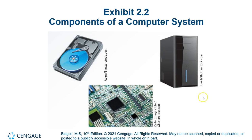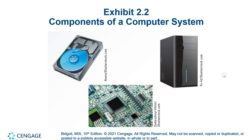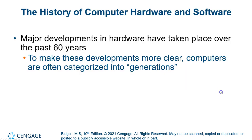This is part two of chapter two, showing some of the pieces in a computer system. We're focusing on the tower, the motherboard, and disc drives.